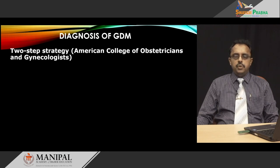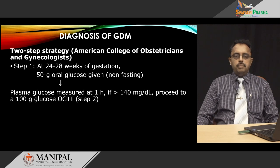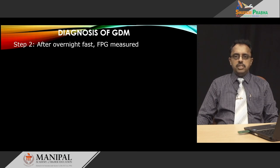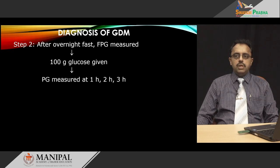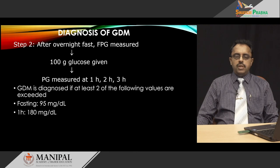Elsewhere, a two-step strategy is followed — as in the United States where the American College of Obstetricians and Gynecologists follows a two-step approach. At 24 to 28 weeks of gestation, a 50-gram glucose load is given in the non-fasting state and a single blood test is done at the end of one hour. If plasma glucose is more than 140 mg/dL, the lab proceeds to a second step using a 100-gram glucose tolerance test. If the result is less than 140, the person is considered normal. In the second step, after an overnight fast, fasting plasma glucose is measured, 100 grams of glucose is given in water, followed by blood tests at one hour, two hours, and three hours. Gestational diabetes is diagnosed if at least two of the following values are exceeded: fasting more than 95, one-hour more than 180, two-hour more than 155, and three-hour more than 140 mg/dL.